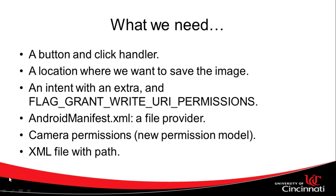We need to create our file provider in the Android manifest. The file provider is what gives us access to write to the SD card. We need camera permissions with the new permissions model, and we need an XML file with a path that the file provider will use to save the file. If this sounds like a lot of work, it kind of is — it's gotten a little more complicated recently, which is why I'm going through an overview now and then we'll look at each step individually.